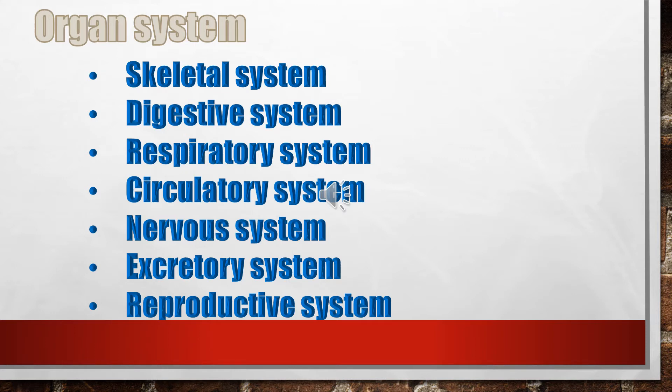In this chapter, we are going to learn about the organ systems: Skeletal System, Muscular System, Digestive System, Respiratory System, Circulatory System, Nervous System, Excretory System, Reproductive System. And we will understand the functions of the organs.